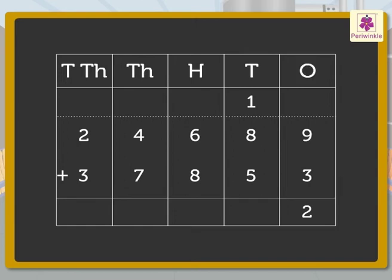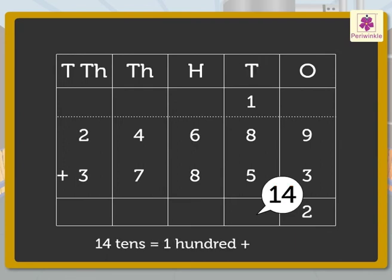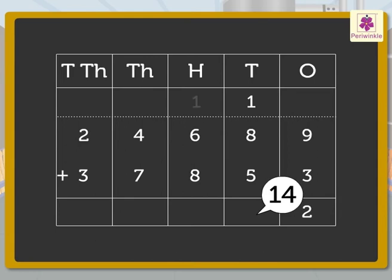Now, add the numbers in the tens column: 1, 8 and 5. We get the number 14. Regroup the 14 tens to 1 hundred and 4 tens. Carry the 1 hundred to the hundreds column and write 4 in the tens column.